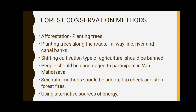These are the major needs for forest conservation. Now, forest conservation methods — how we can do forest conservation. First, afforestation means to plant more and more trees. Along with afforestation, reforestation also occurs — reforestation means to plant trees in areas where deforestation has already occurred. Next, planting trees along roads, railway lines, river and canal banks.